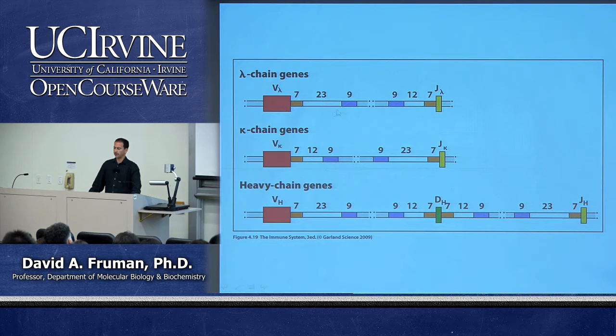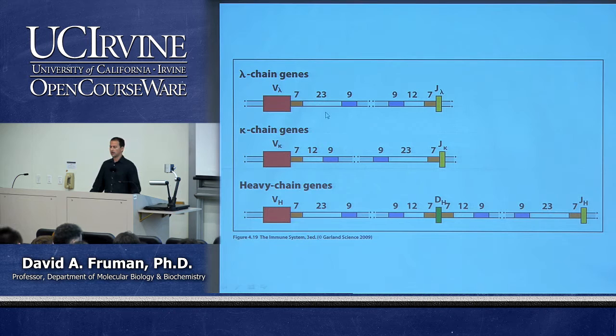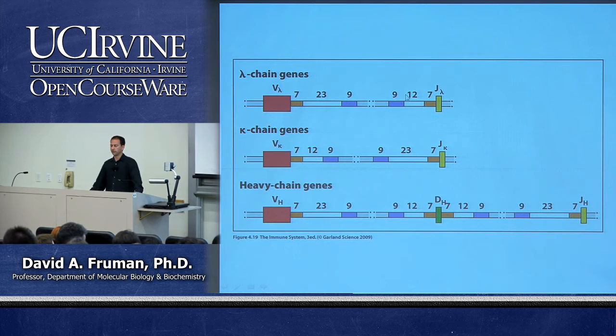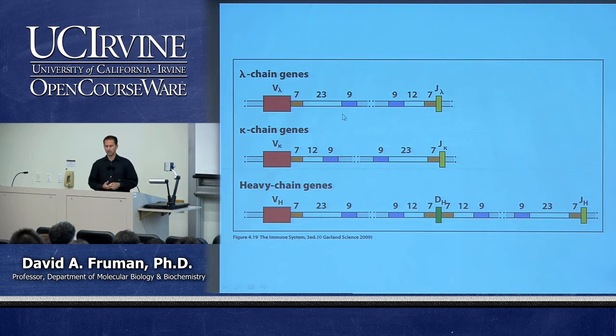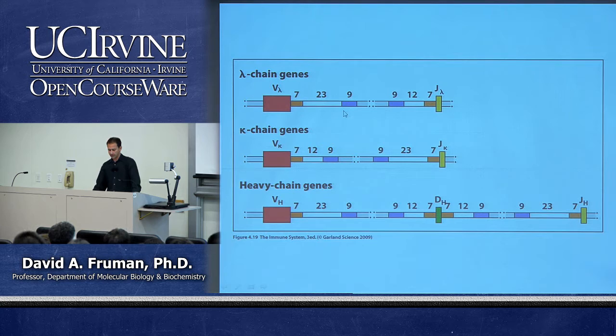The heptamer and nonamer are always separated by either 12 nucleotides or 23 nucleotides — shown in white here. The sequence of those spacer nucleotides is not conserved; it's the number that's conserved. The 12 and 23 represent one and two helical turns of DNA respectively, approximately 11.5 nucleotides per turn. This means the heptamer and nonamer face in the same direction on the DNA double helix, which is essential for recognition by the recombination machinery.